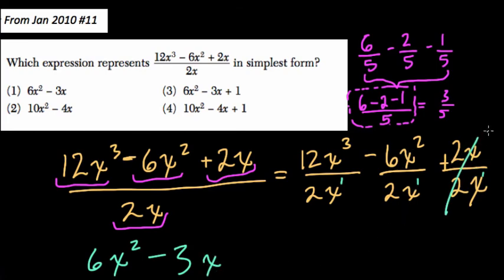And then the last term should be 1. 2x over itself is just plus 1. And that's our answer. And you can see it here in choice 3.